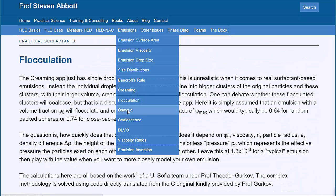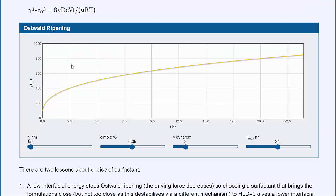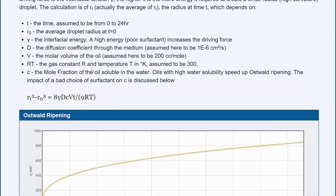There's Ostwald ripening. You start off with small drops at a small time. And over time, the drops get larger and larger. This can be catastrophic, especially if you have very small drops where they rise to large drops very quickly. So those trying to make nano emulsions have great difficulty with Ostwald ripening. But there is a fix. You just put in a tiny amount of hexadecane and it stops Ostwald ripening stone dead.